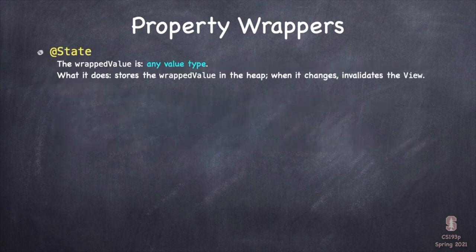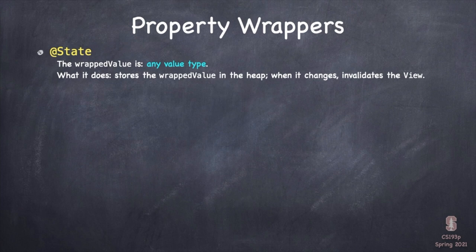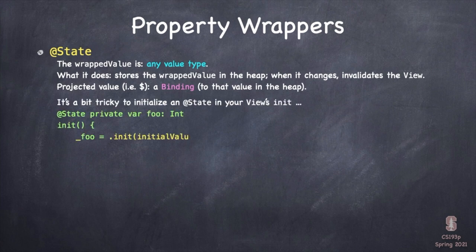@State's wrapped value is pretty much any value type. We use @State vars to put a value type into the heap — not only put into the heap, but in a way that invalidates the view whenever it changes and causes its body to get reconstructed. Also stored in the heap such that as views are created and destroyed, as long as the view is staying on screen, the value stays the same. The projected value of @State — the dollar-sign version — is a binding to that value in the heap.